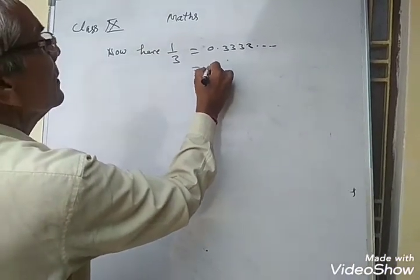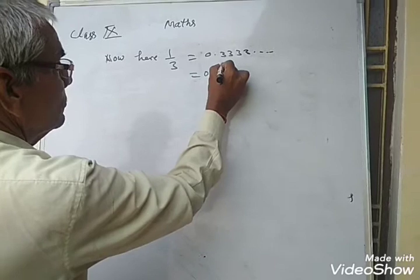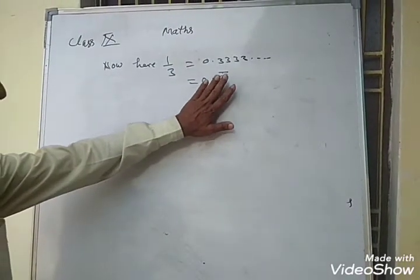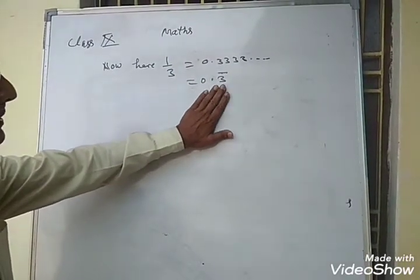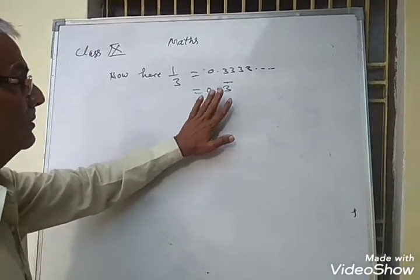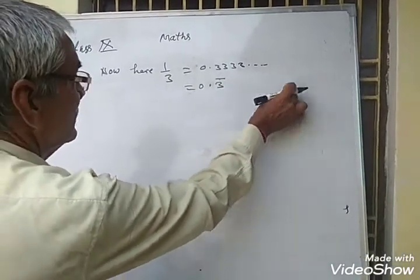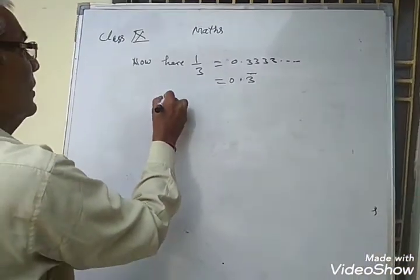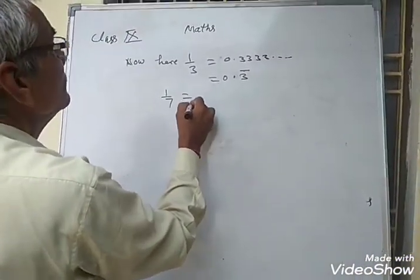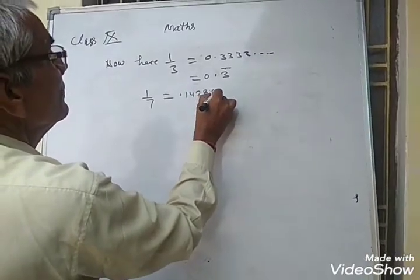To denote it in short, we can write it in the form of 3 with a bar over it. The bar means 3 is repeating. If 1 by 7 is equal to 0.571428...